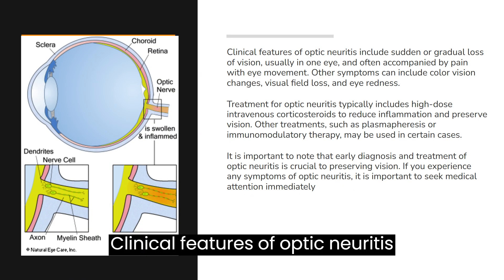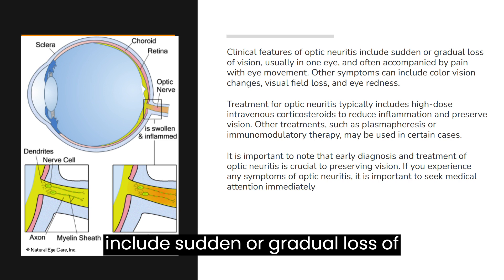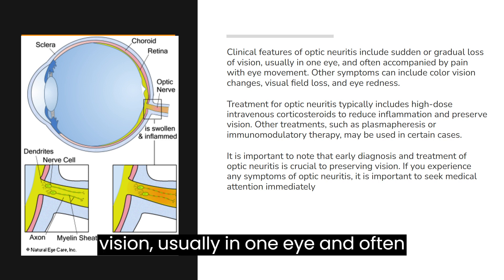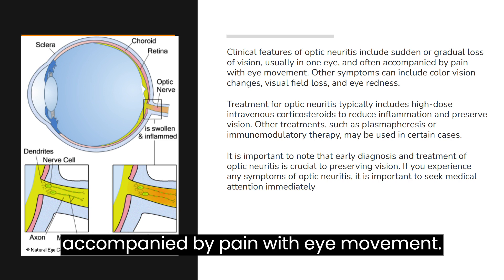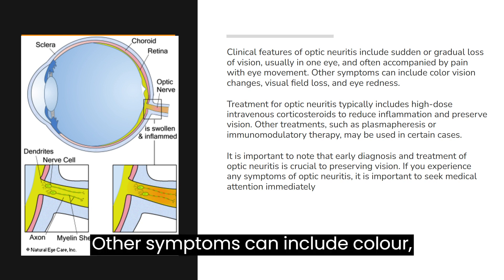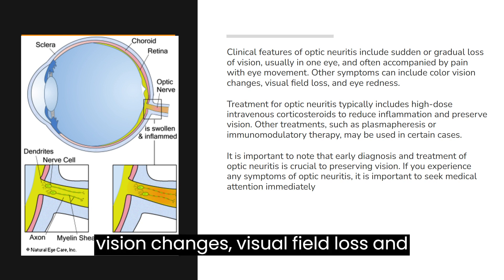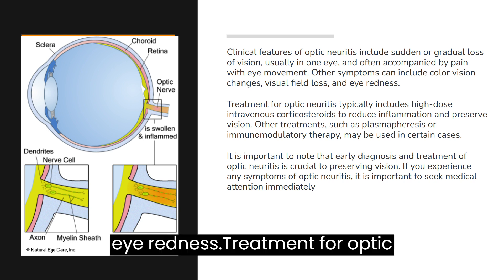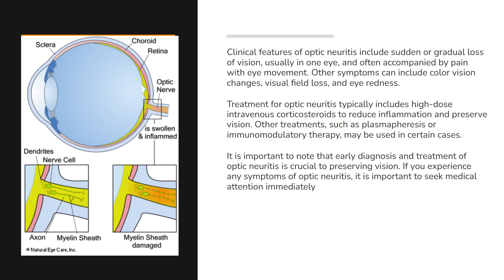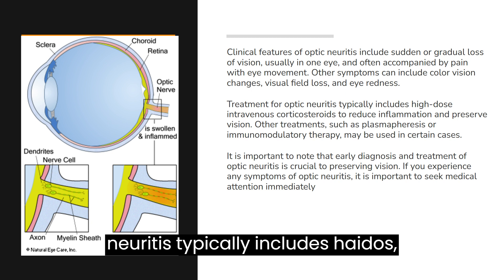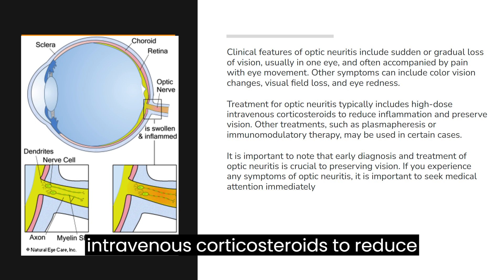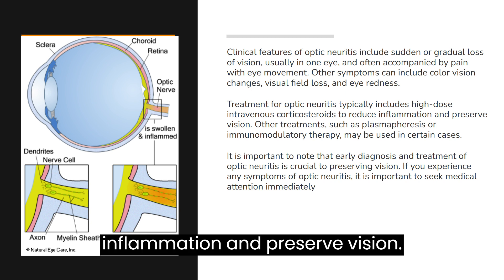Clinical features of optic neuritis include sudden or gradual loss of vision, usually in one eye, and often accompanied by pain with eye movement. Other symptoms can include color vision changes, visual field loss, and dimness. Treatment for optic neuritis typically includes high-dose intravenous corticosteroids to reduce inflammation and preserve vision.